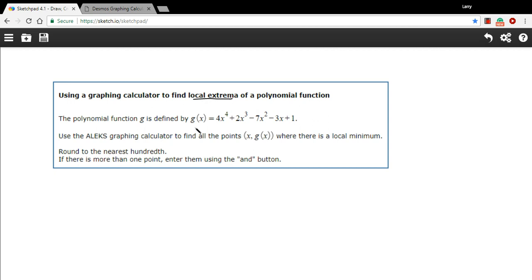In this particular problem, we're given this big old polynomial, a fourth degree polynomial, and we're being asked to find any points where there's a local minimum.